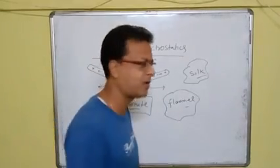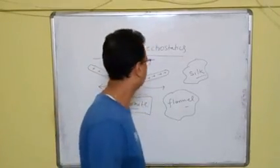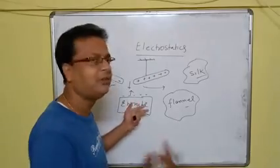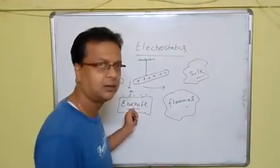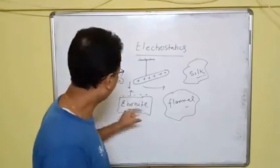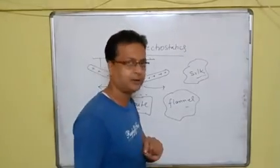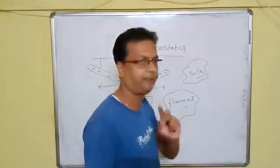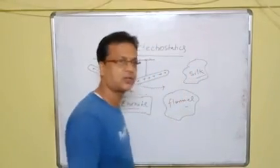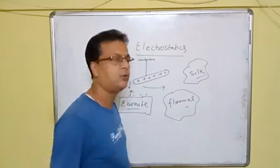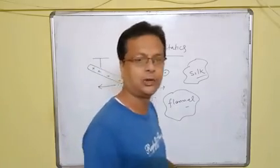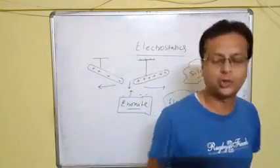Now a good question arises: why do glass and ebonite have different charges? Why does the glass have positive charge and why does the ebonite have negative charge? To understand that, we must go to the electron theory and the atomic structure.